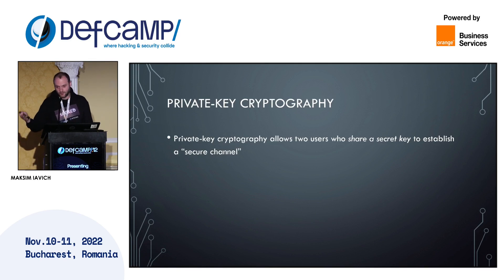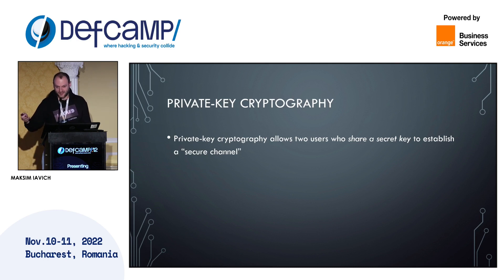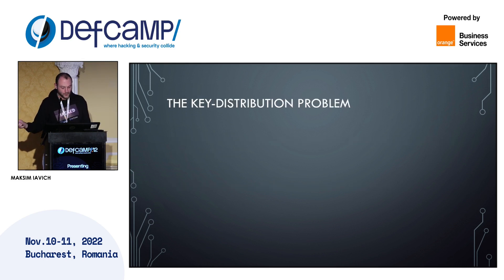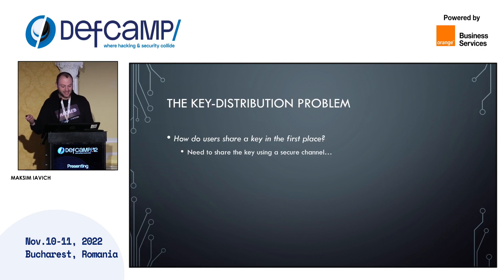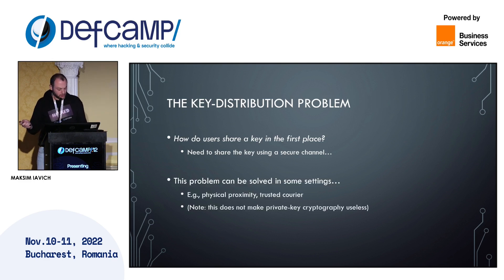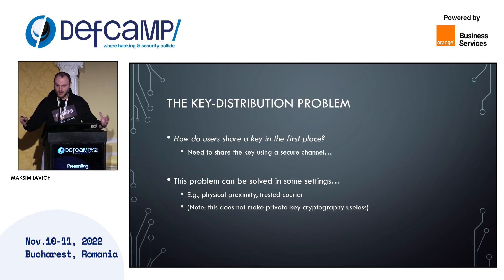Let us talk about private key cryptography, so-called symmetric cryptography. Here two users have already a secret key shared between each other, and they need to share some secret message somehow by encrypting it with this key. The problem is the key distribution problem: how do these users share the key? They need some kind of secure channel. One approach to solve this problem is physical proximity — they have to meet each other and somehow pass the key.